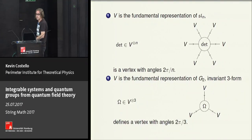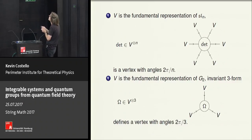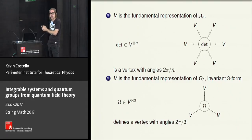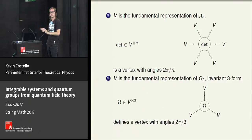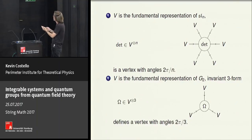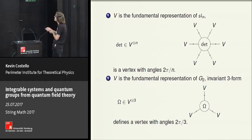Here's another simple case: take the determinant, which is an invariant tensor for SL(N). The determinant is cyclically symmetric, so if we can cancel the anomaly, we must do so in a way that cyclic symmetry is not broken — the angles are just 2π/n for symmetry reasons. Another example: take the fundamental representation of G₂; by symmetry the invariant anti-symmetric three-tensor forces the angles to be 2π/3.